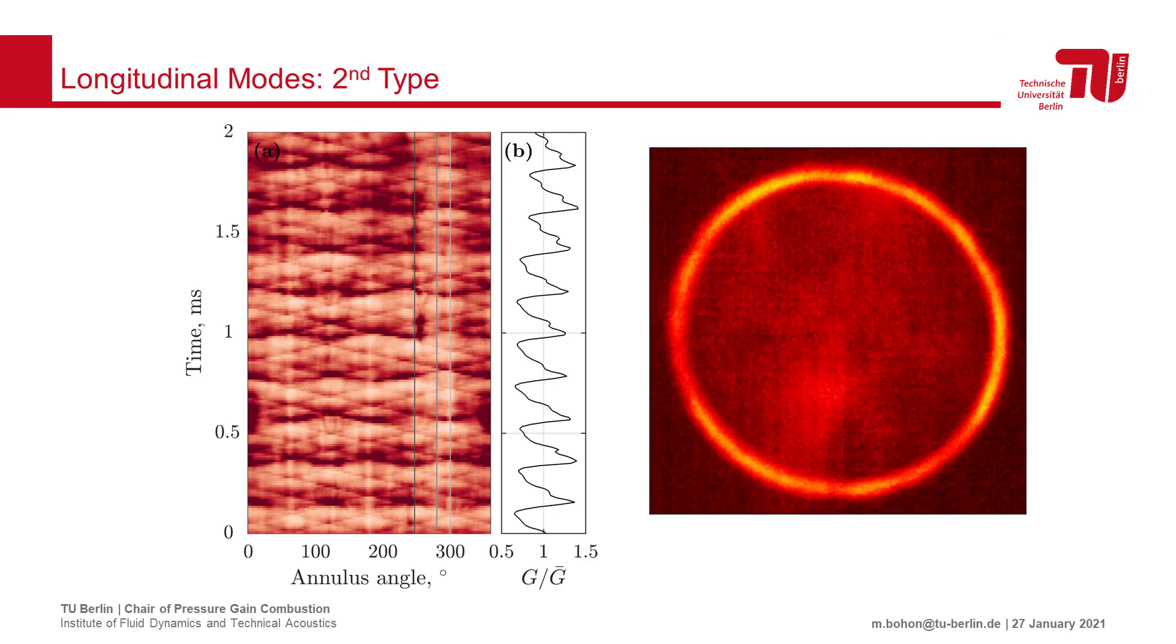Here, we see the significant variation in the global intensity distributed around the perimeter of the combustor. Some small rotating components can still be seen, however, they are less steady and appear to be dependent on the global oscillation.